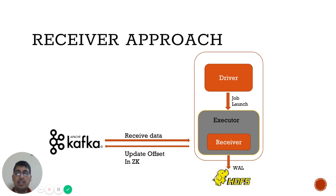If you want to increase the parallelism of reading messages from Kafka, you can start multiple receivers in different executors. If you want to process all those messages received in a single batch interval, you have to do a union of all the streams you're getting from the different receivers.